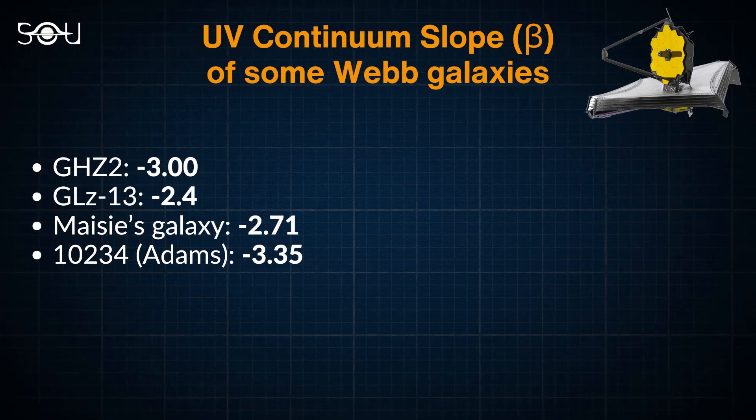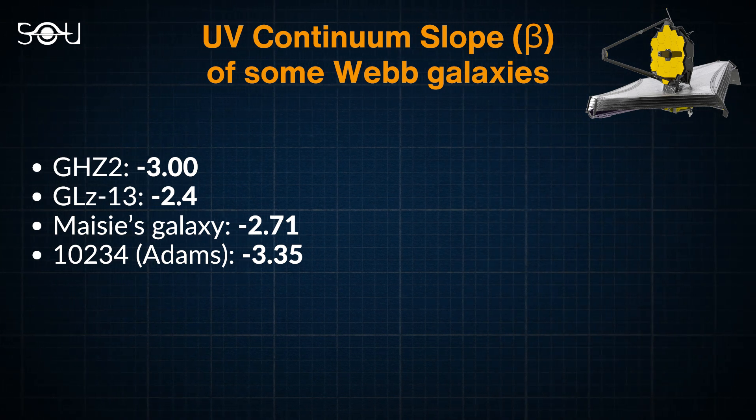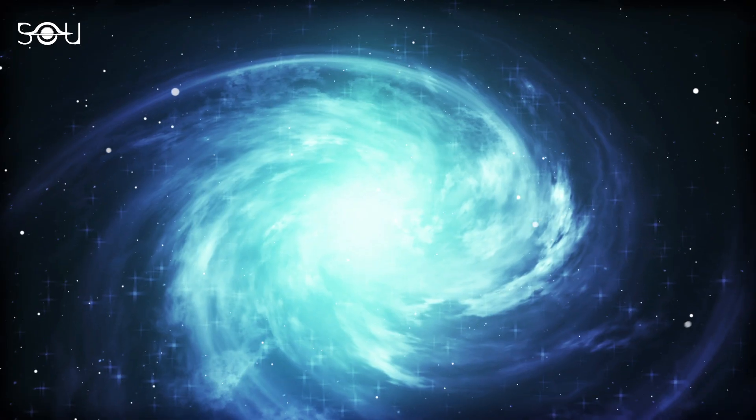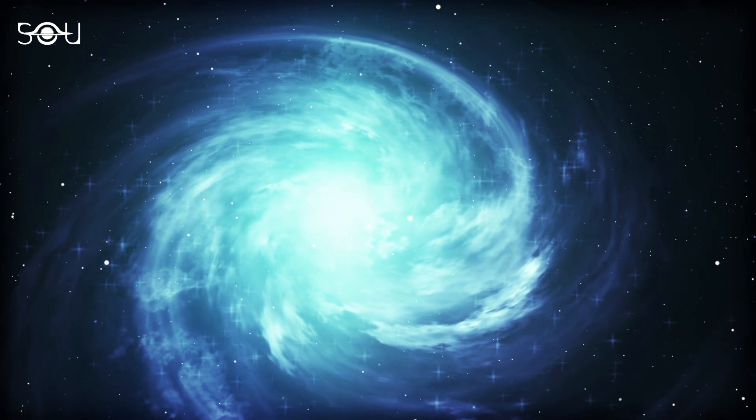Here are the beta values of some of the galaxy candidates discovered by the James Webb Space Telescope. These values indicate that the galaxies are extremely blue, and since they are pretty massive, the researchers have named them blue monsters.